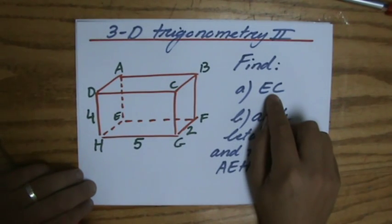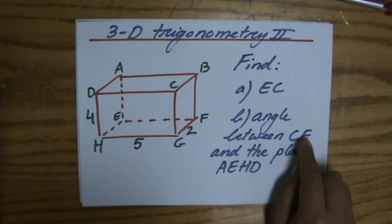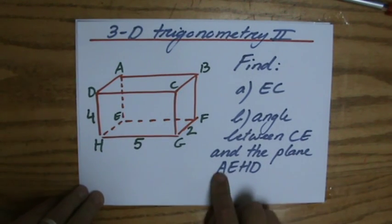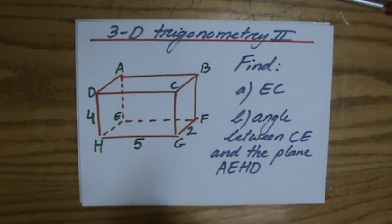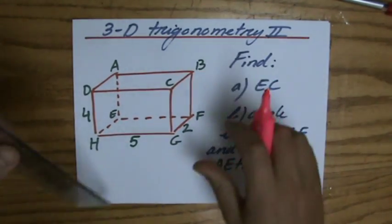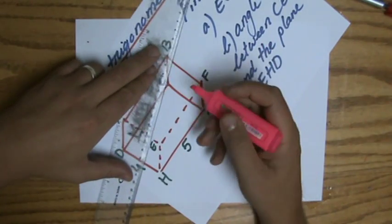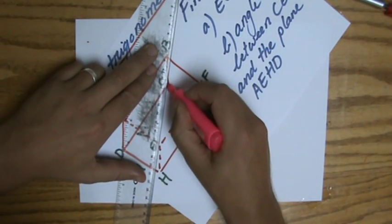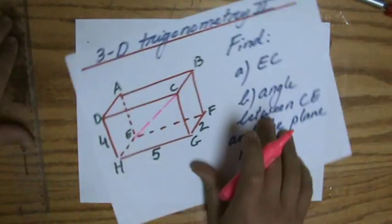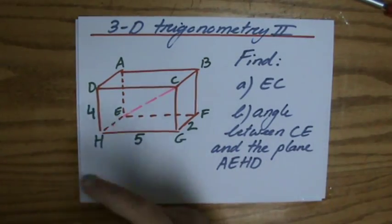We're going to find the length of EC and then find the angle between EC or CE and the plane AEHD. Let's start with EC. Let me draw that line. That is the diagonal going through the entire cuboid.